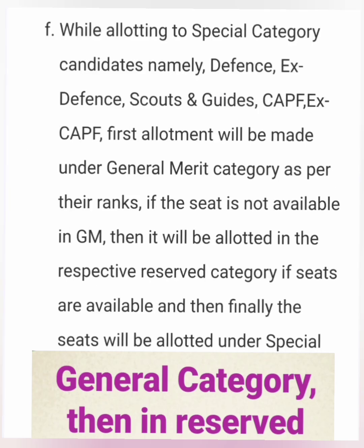Point F covers special categories like defense: ex-defense, scouts and guides, CAPF, and ex-CAPF. For these students, the computer first checks their rank for a general merit seat. If available, they are given a general merit seat. Then it checks reserve category C — SC, ST, or OBC — since defense personnel can also belong to these categories. If still not allotted, it checks the special defense category.